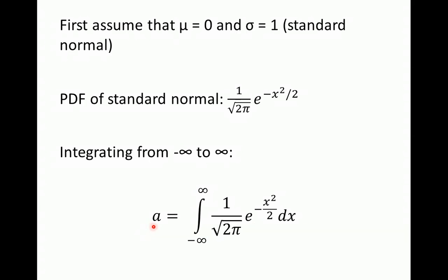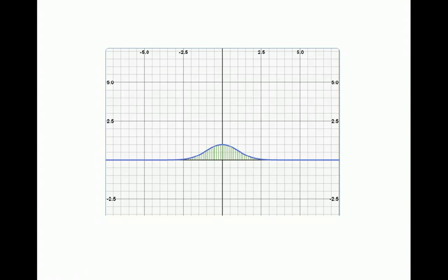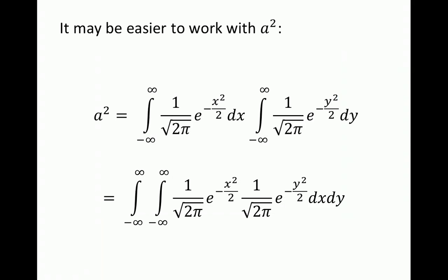Let's define variable A as the integral from negative infinity to infinity of this function over x. What we're doing is integrating this function — the integral represents the total area under the curve. In this case we're integrating over x from negative infinity to infinity and computing the total area under the curve for this range.